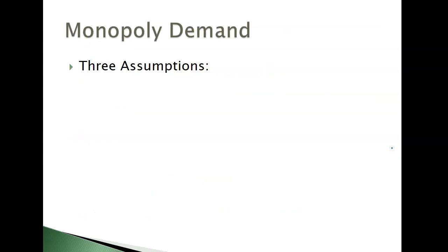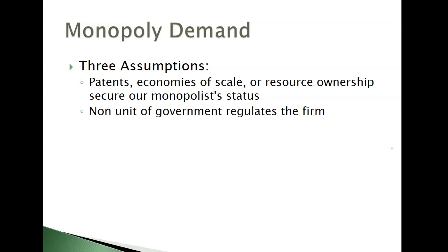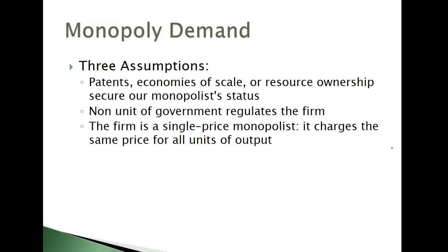So, the monopoly demand curve. Three assumptions: one, they are a monopoly for all those reasons; two, we're going to assume they are not a unit of government and not regulated in any way; and three, they are a single-price monopolist — not using price discrimination, which we'll talk about later. Whatever the industry price is — agreed upon by producers and consumers — that price is true for all consumers, even though we'll have a downward sloping demand curve.